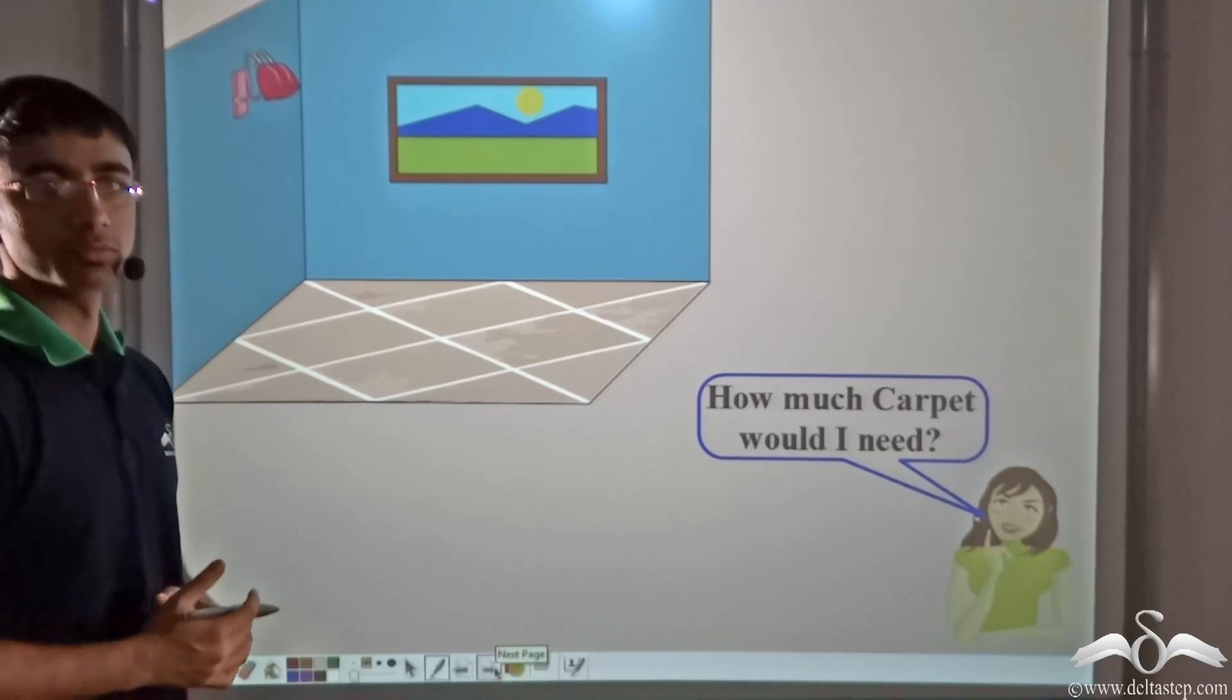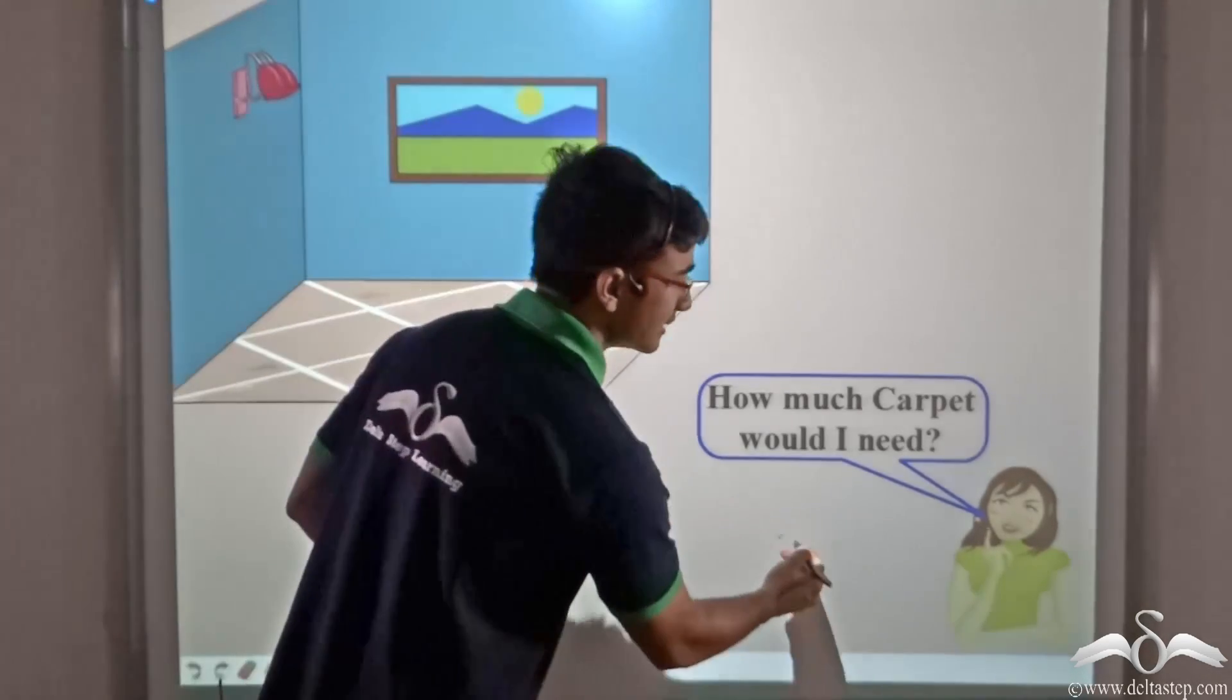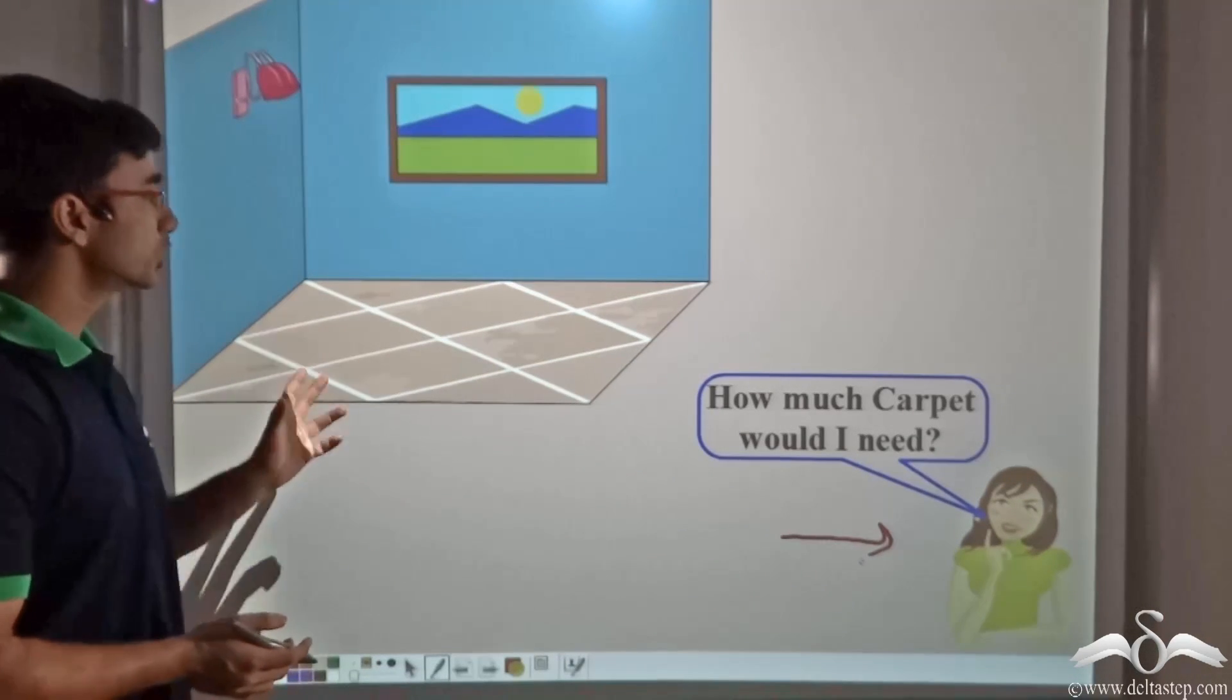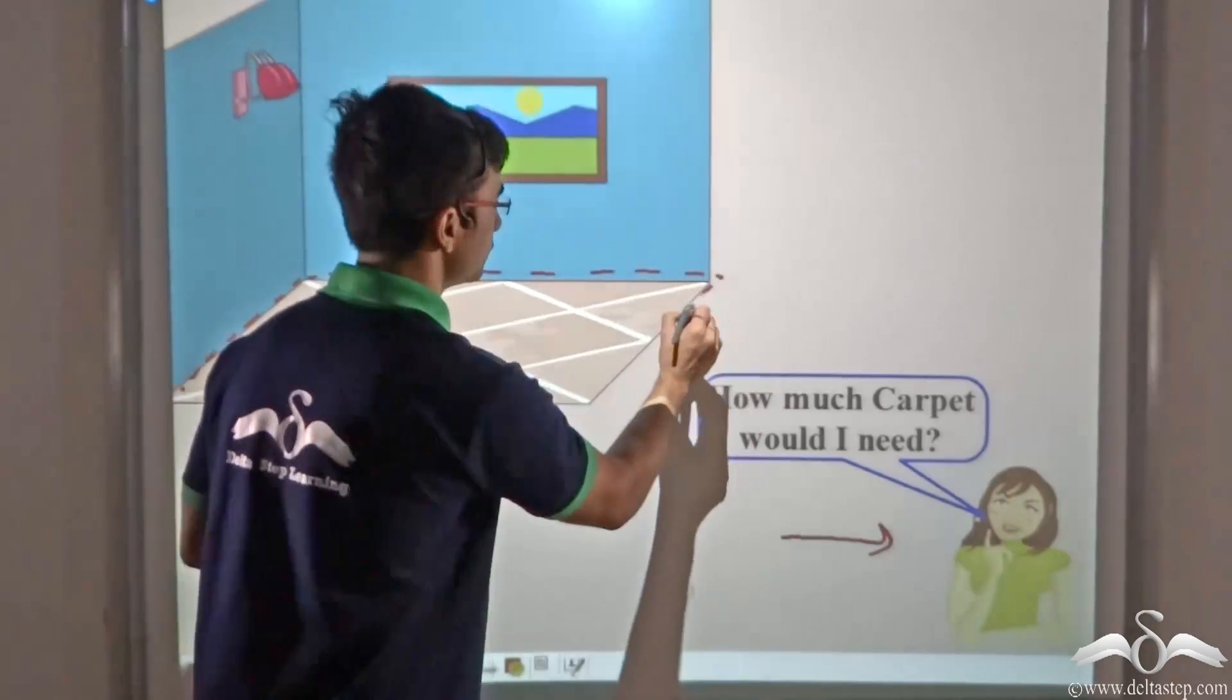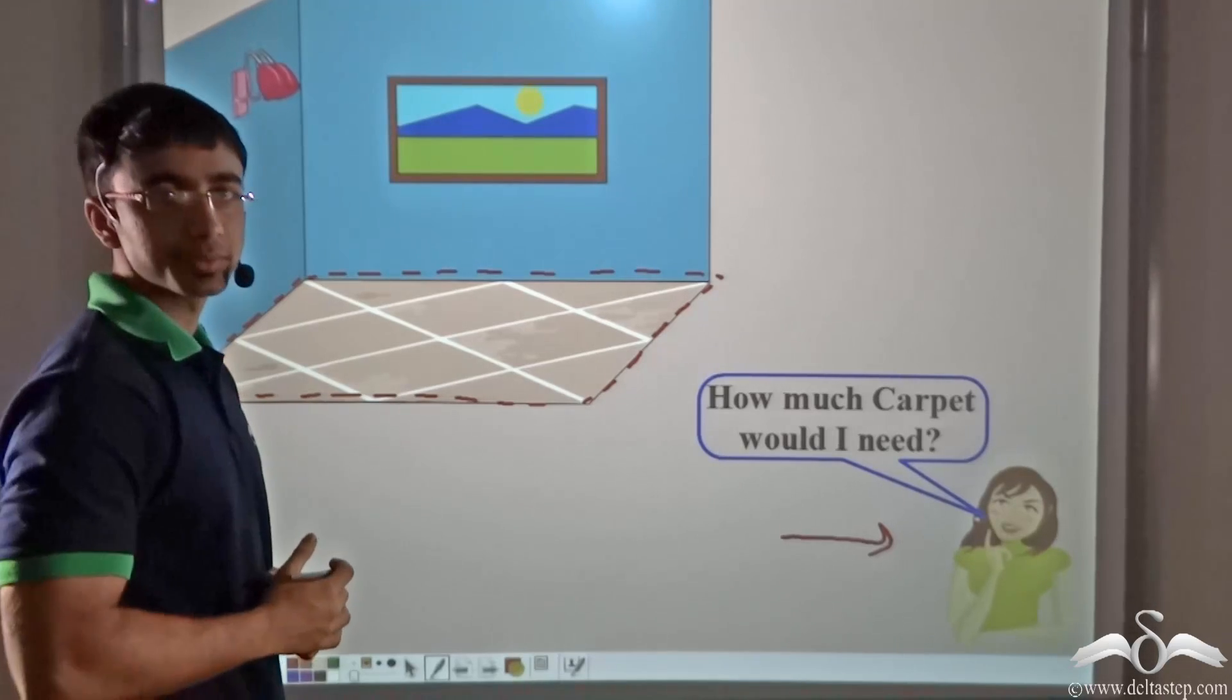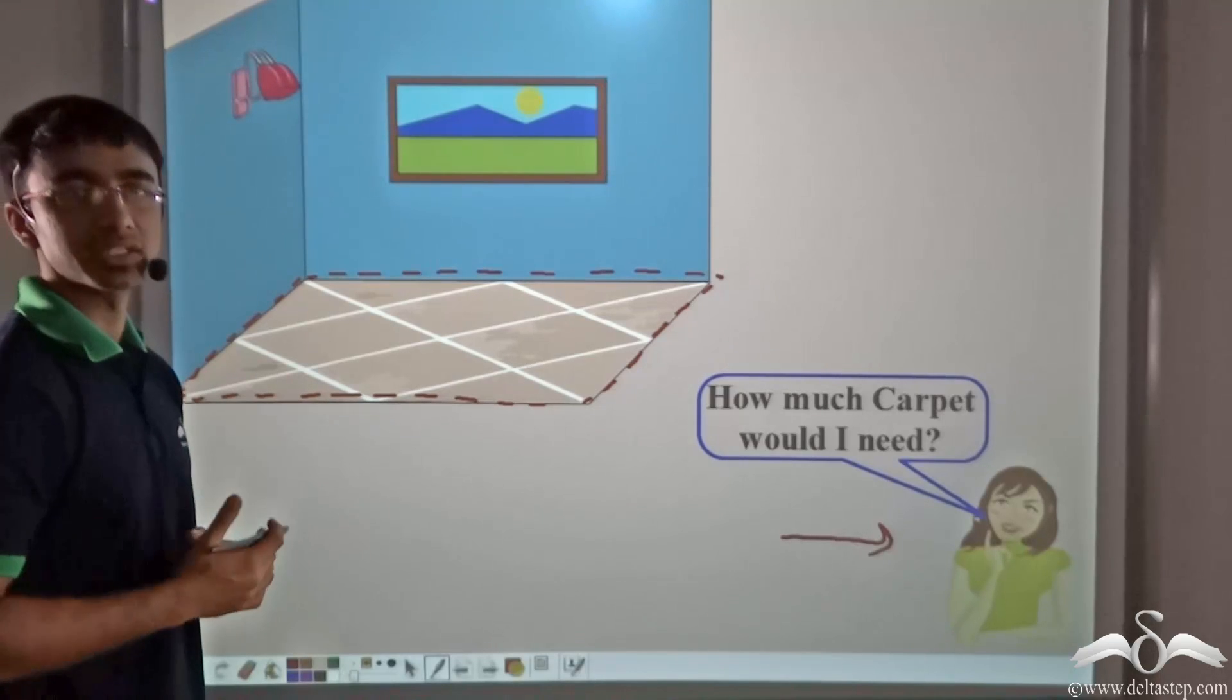Now let us consider another problem. The problem over here is Mrs. Verma, this lady, she is renovating her store and in order to renovate her store, she needs a carpet for her floor. Now it has been given that this particular floor of Mrs. Verma's store is parallelogram in shape and in order to cover this parallelogram shaped floor, she needs a carpet.